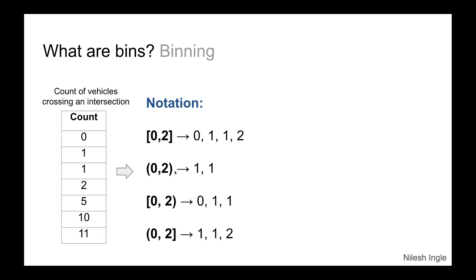If there are parentheses instead of square brackets, those are called the edges of the bin, and the edges are not included. So for the notation (0, 2), zero and two are excluded, leaving only the value one in the bin. Only those data points within the exclusive range are counted.